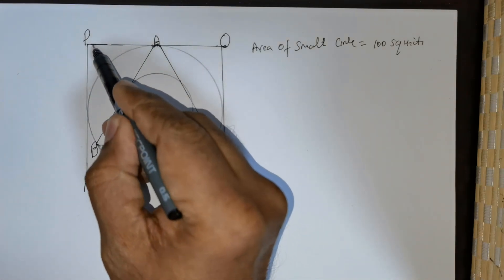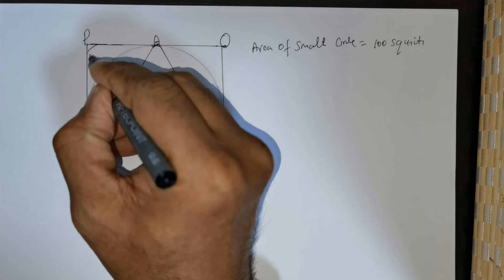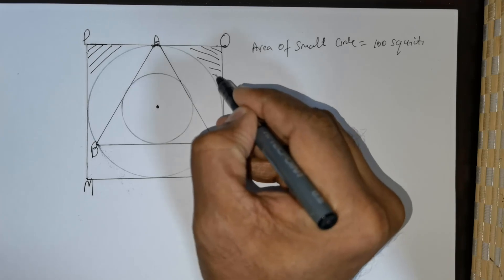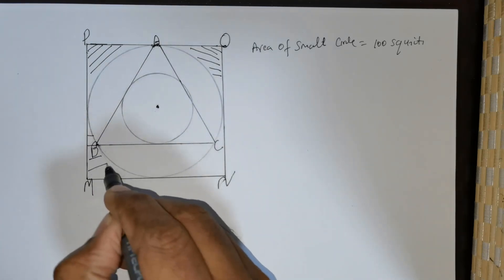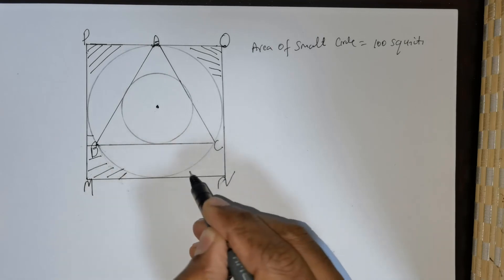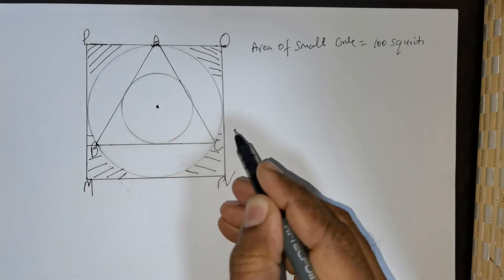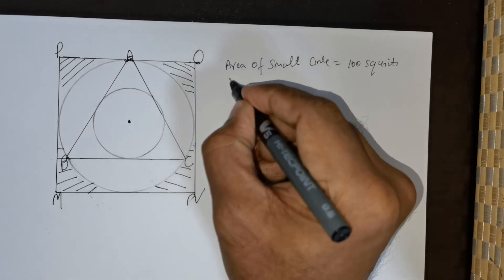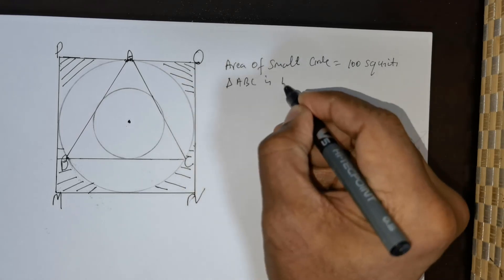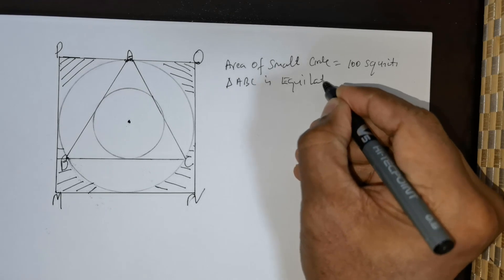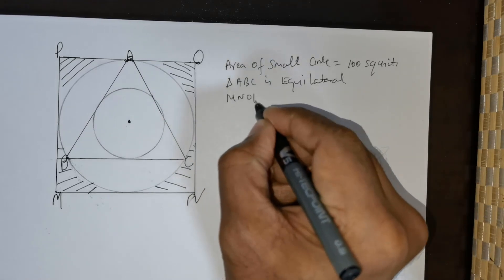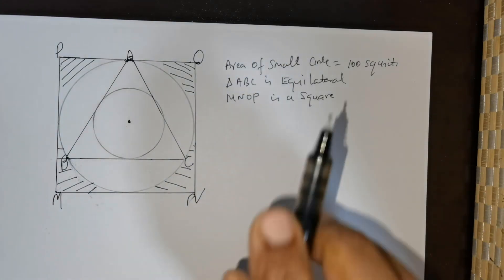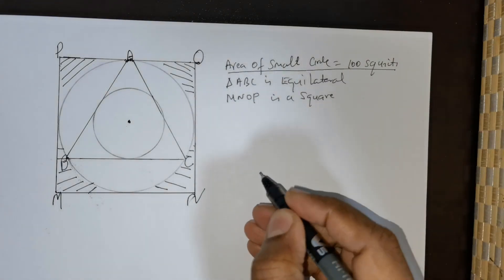Good day everybody. We are expected to find the area of the shaded region — that is, the region marked with stripes. We are only given one piece of data: the area of the small circle is 100 square units. We are also given that triangle ABC is equilateral and MNOP is a square.